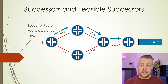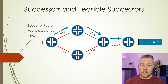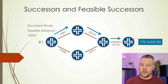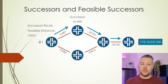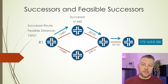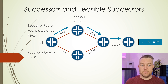The feasible distance is the metric along this path. The next hop IP address in this path is called the successor. The successor advertises the feasible distance to all of its neighbors, and when it does this, we call it the reported distance.